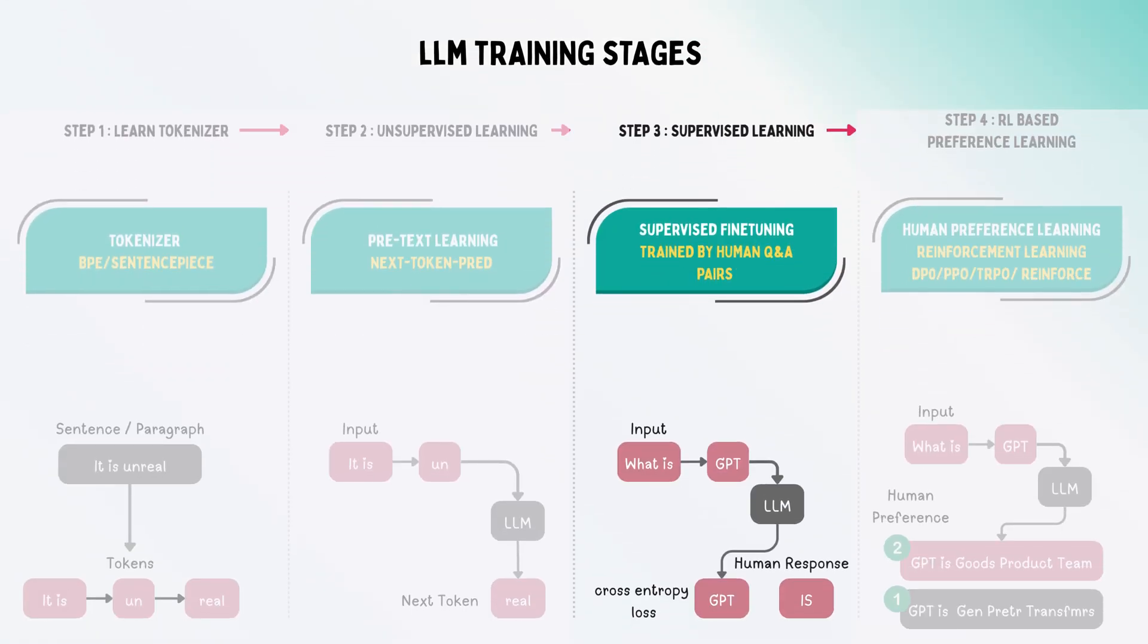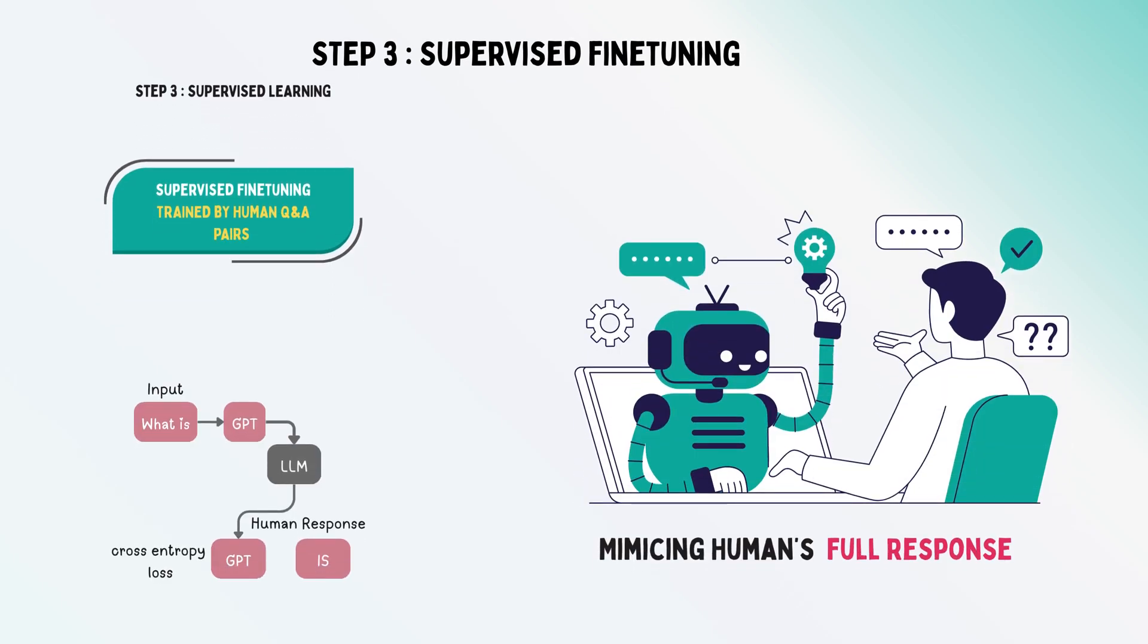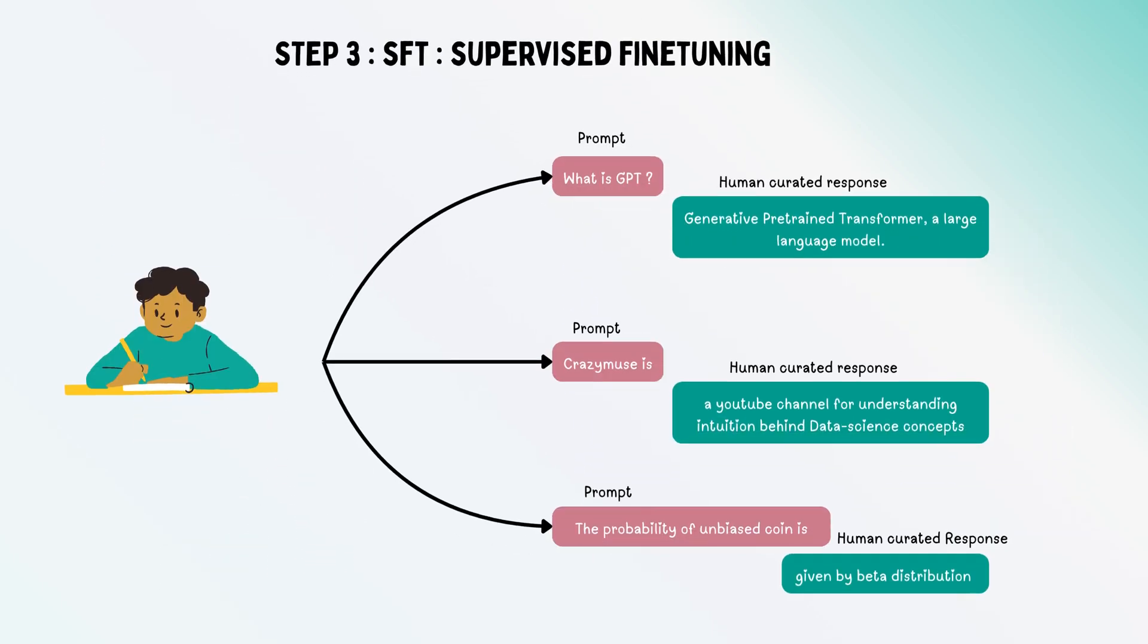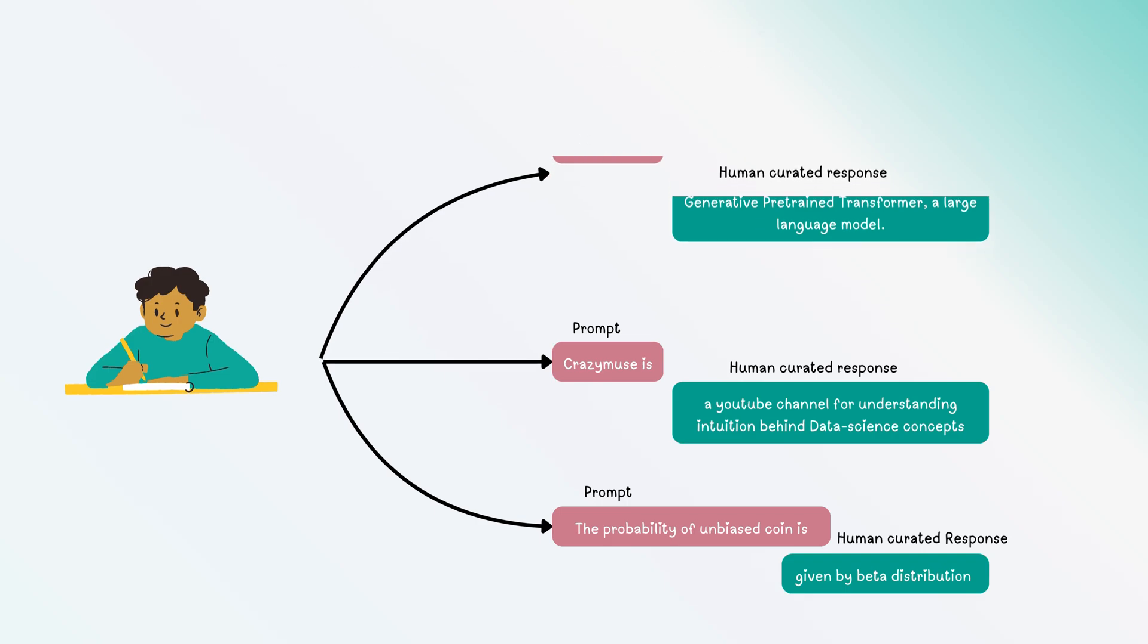In this stage, we make the model mimic human behavior. If the human response to prompt X is Y, then the model should also respond Y.